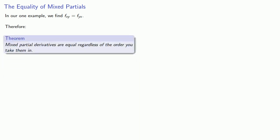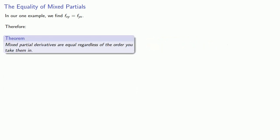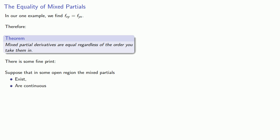Therefore, from one example, we might conclude mixed partial derivatives are equal regardless of the order you take them in. You'd want more evidence than one example, but it does turn out to be true — provided we include some fine print. Suppose that in some open region the mixed partials both exist and are continuous. Then, as long as these conditions hold, the mixed partials will be equal in that region.